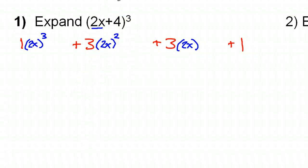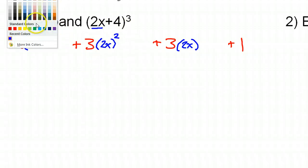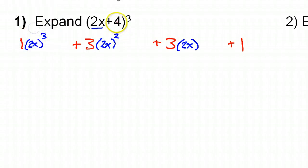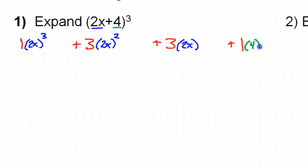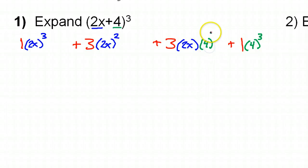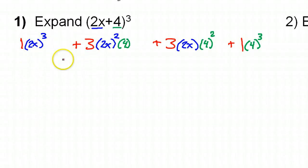Then we jump over and look at the next term, which is 4. It's on the right, so think to yourself: start on the right. We'll do (4)³, and then slide to the left decreasing the degree each time — so 4², then 4 to the 1 power. And the last one doesn't get any 4 because that would be 4 to the zero power. So we've got this setup.